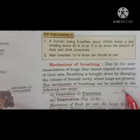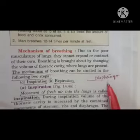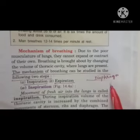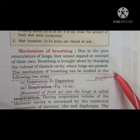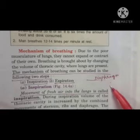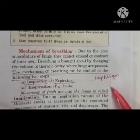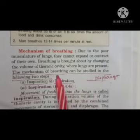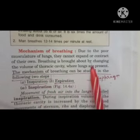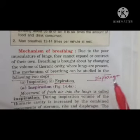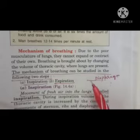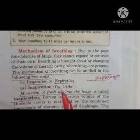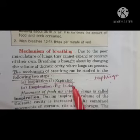The diaphragm divides our body cavity into two parts: the upper part is called the thoracic cavity and the lower part is called the abdominal cavity. So breathing is brought about by changing the volume of the thoracic cavity where lungs are present. The mechanism of breathing is studied in two main steps: first is called inspiration and second is called expiration.